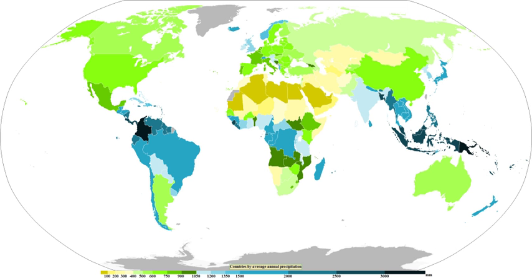Stratiform or dynamic precipitation occurs as a consequence of slow ascent of air in synoptic systems, such as over surface cold fronts and over and ahead of warm fronts. Similar ascent is seen around tropical cyclones outside of the eyewall, and in comma-head precipitation patterns around mid-latitude cyclones. A wide variety of weather can be found along an occluded front, but usually their passage is associated with a drying of the air mass. Occluded fronts usually form around mature low-pressure areas. Mars has precipitation that most likely takes the form of ice needles, rather than rain or snow.